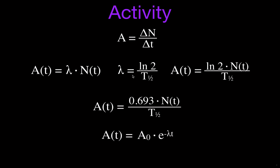The third equation states that the activity at some time T is equal to the original activity A₀ — when the sample was first collected or produced — times e (Euler's number) raised to the power of negative lambda times T. This time T is the elapsed time between the two activity measurements. We can use this equation to calculate the original activity, for example in radiocarbon dating using carbon-14.